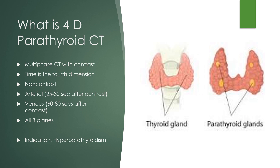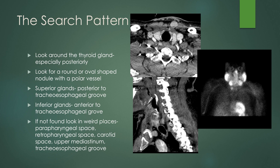As you remember, the thyroid gland has paired lobes, and the parathyroid glands are intimately related to the thyroid glands. You usually can't see them very well on CT — they tend to be stuck up on the posterior border of the thyroid glands. You have superior and inferior sets of parathyroid glands. When looking for a parathyroid adenoma, you're looking around the thyroid gland, especially posteriorly, for a round or oval-shaped nodule, especially one with a polar vessel at the pole of the nodule, as opposed to a lymph node which would usually have a hilar vessel. The superior parathyroid glands are posterior to the tracheoesophageal groove, and the inferior glands are anterior to the tracheoesophageal groove.